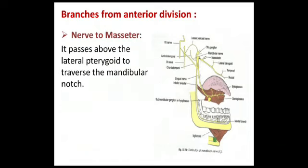The nerve to masseter, as the name implies, supplies the masseter. The nerve passes above the lateral pterygoid, traverses the mandibular notch of the mandible, and supplies the masseter.